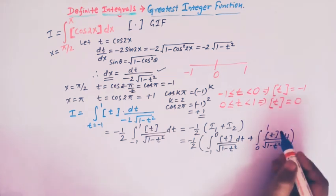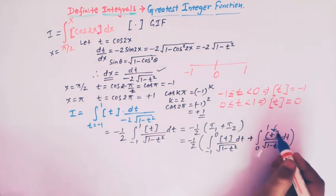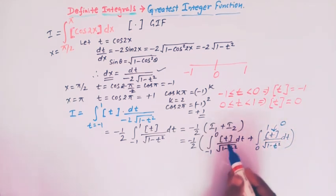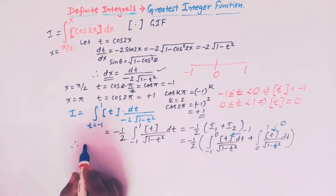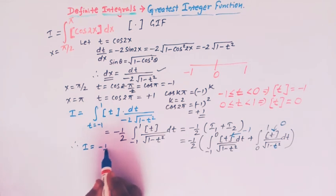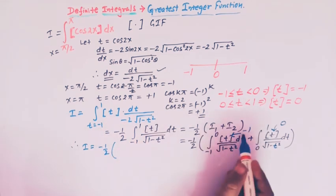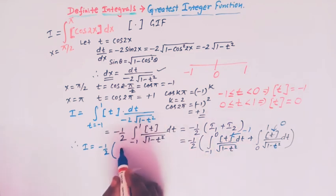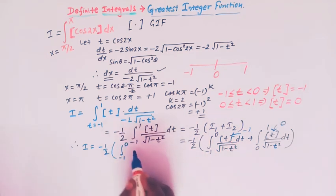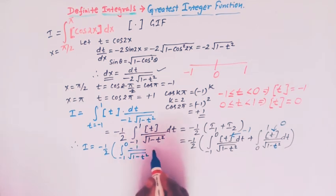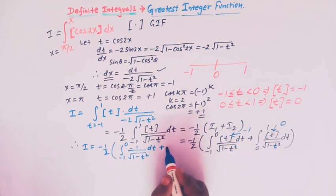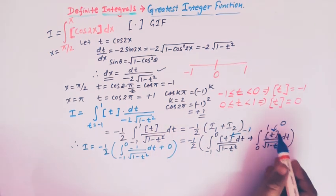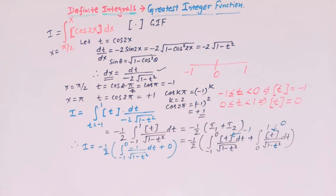Substituting these values: ⌊t⌋ = −1 for the first integral and ⌊t⌋ = 0 for the second. Therefore I = −(1/2) times the integral from −1 to 0 of (−1)/√(1 − t²) dt, and the second integral I₂ equals 0 because ⌊t⌋ = 0 in that interval.